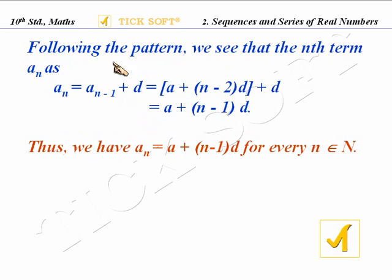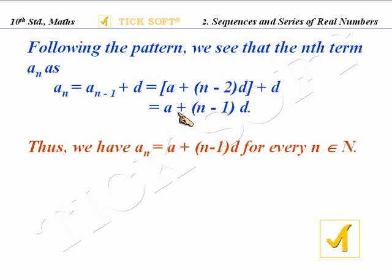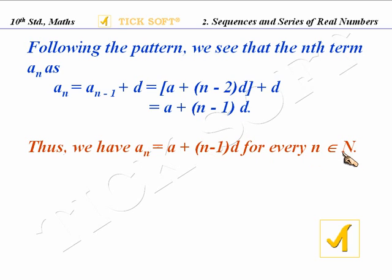Following the pattern, we see that the nth term An equals A(n-1) plus D, which equals A plus (n-2) times D plus D, and that is A plus (n-1) times D. So we have An equals A plus (n minus 1) times D for every n belonging to capital N.